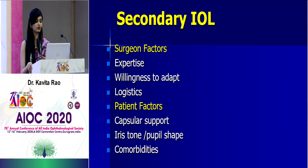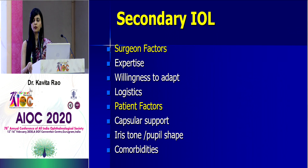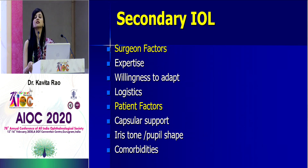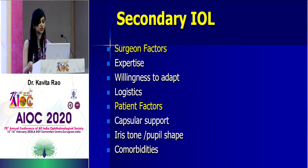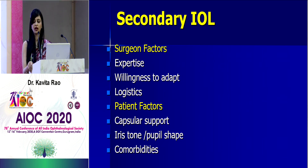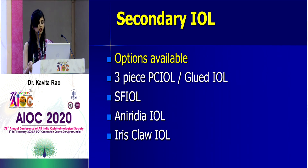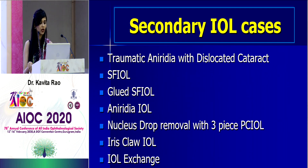Looking at patient factors: Is there any capsular support? What is the iris tone — very important if you're debating whether an iris claw can be used. In difficult cases, iris tone may be poor because the patient may have had pseudo-exfoliation or trauma, making those non-ideal cases for iris fixation. Co-morbidities such as diabetic macular edema or need for peripheral retinal lasers may also make iris fixation non-ideal. The available options include three-piece IOL for glueing, SF IOL, aniridia IOL, and iris-claw IOL.